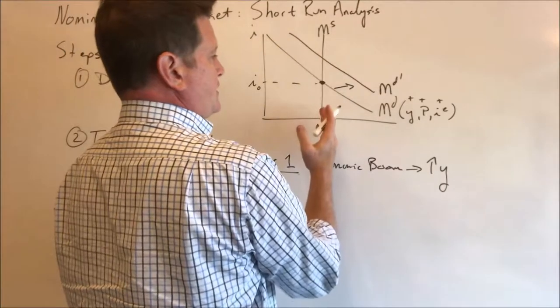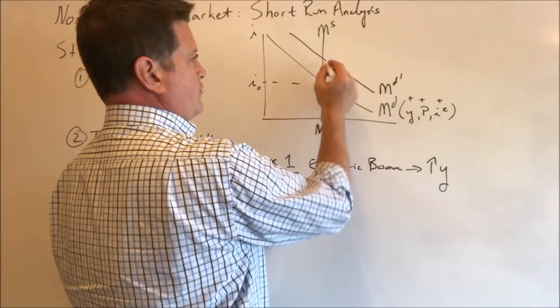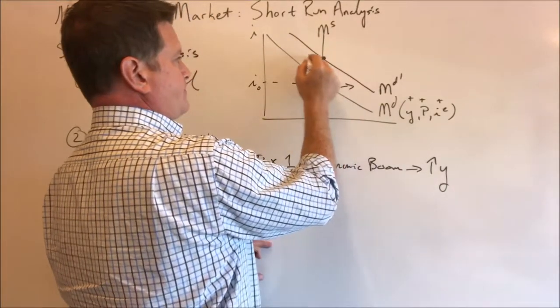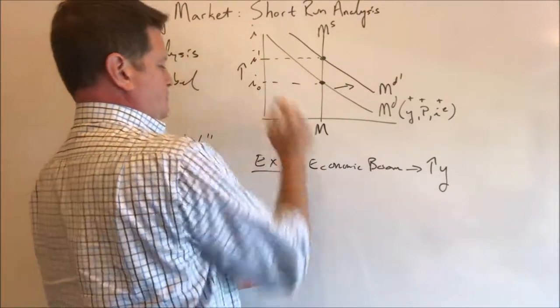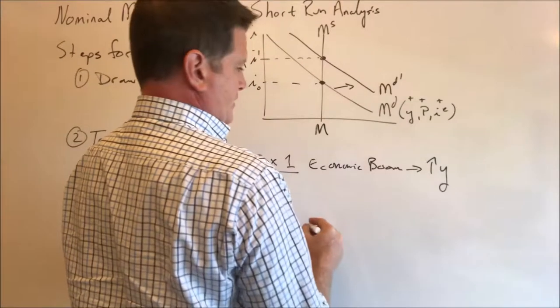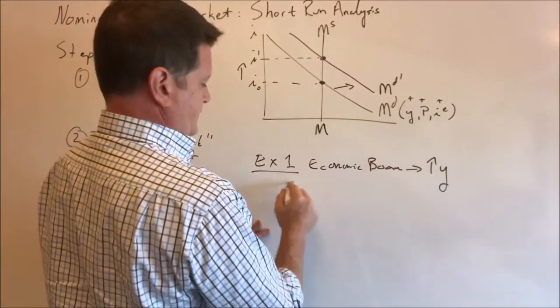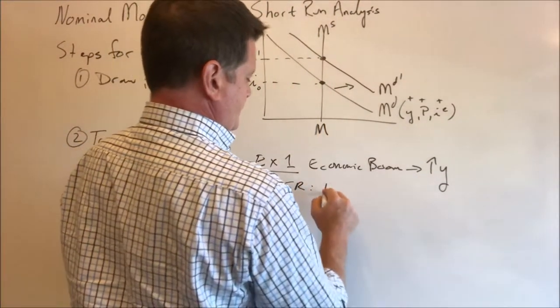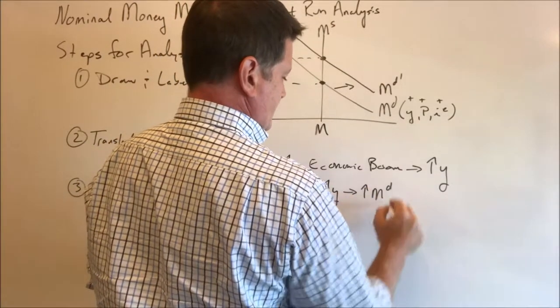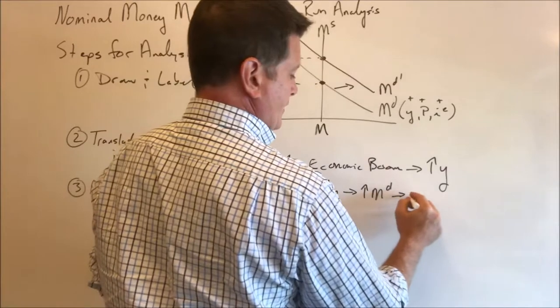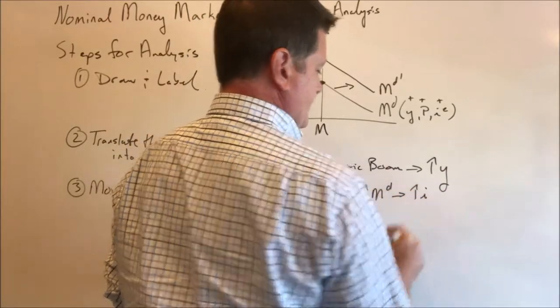Notice money supply didn't change. So the new equilibrium is here. And interest rates rose. I like to write out that the effect of this, the short run effect is that higher real GDP led to an increase in money demand. And that led to an increase in the nominal interest rate.